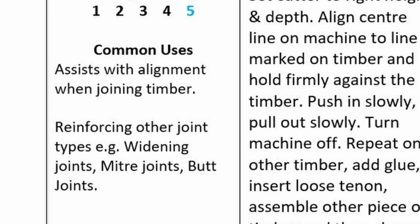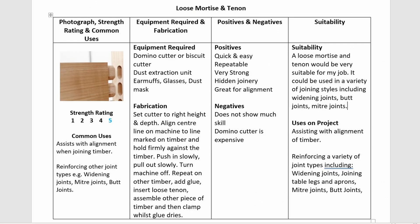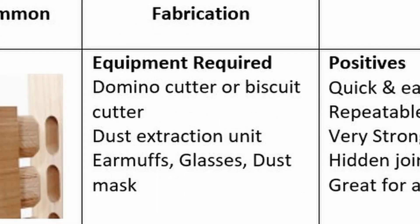Below is where you state what the common uses for the joint are. The column to the right discusses the equipment required and the fabrication process for each joint. When describing the equipment required, do not forget to state the personal protective equipment as well as the machinery.